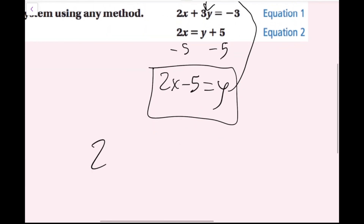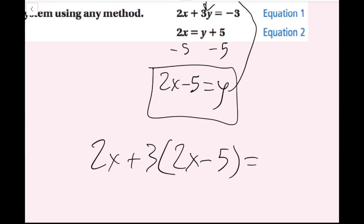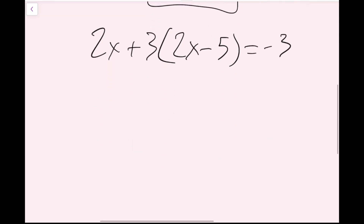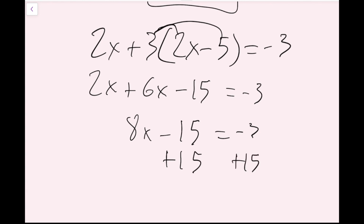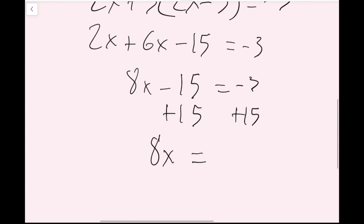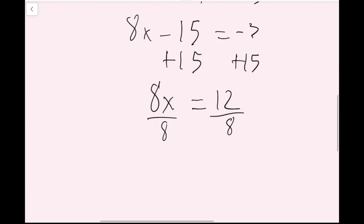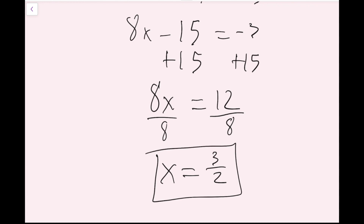So I get 2x plus 3 times (2x minus 5) equals negative 3. Now I'm just going to solve this equation to find my x value — I'll distribute my 3. So I get 2x plus 6x minus 15 equals negative 3. Combine like terms to get 8x minus 15 equals negative 3. I can add 15 on both sides to get 8x equals 12. Now I just divide by 8 on both sides, and if I simplify 12 over 8, I get x equals 3 over 2. You could write this as 1.5 or 1 and a half.